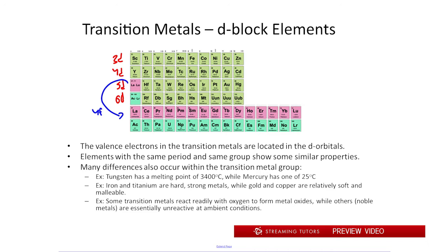So down here is 4f, down here is 5f. So the valence electrons for these d-block elements that we're going to be primarily talking about are all located in the d orbitals, whether they be 3d, 4d, 5d, depending on the period.